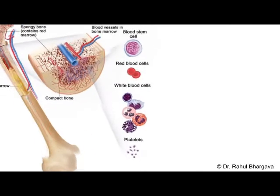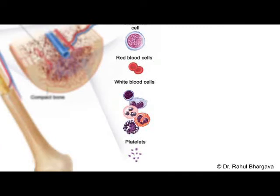In MDS, the bone marrow doesn't make enough of these three types of blood cells. Instead, it makes undeveloped and abnormal cells that don't function properly. And gradually, the bone marrow becomes full of these abnormal blood cells and eventually they spill out into our bloodstream.